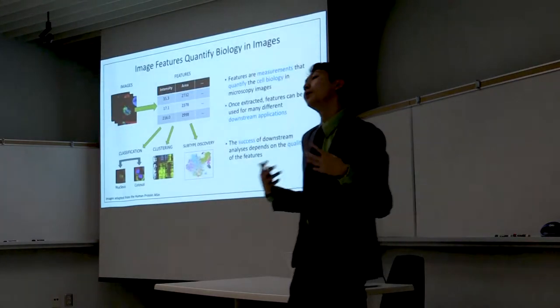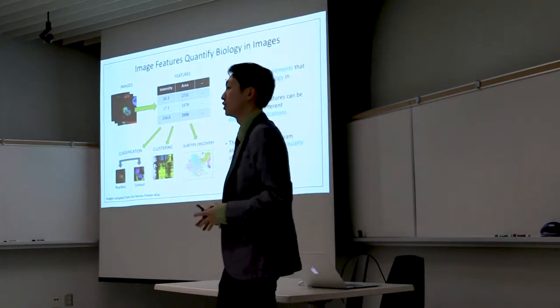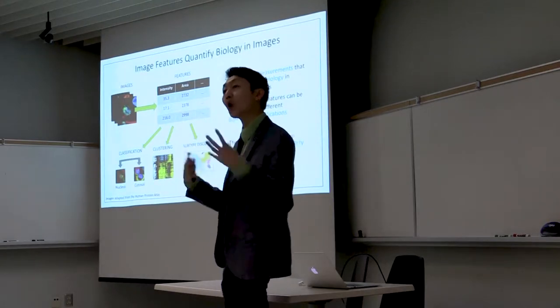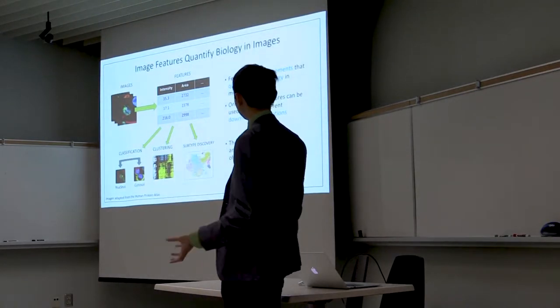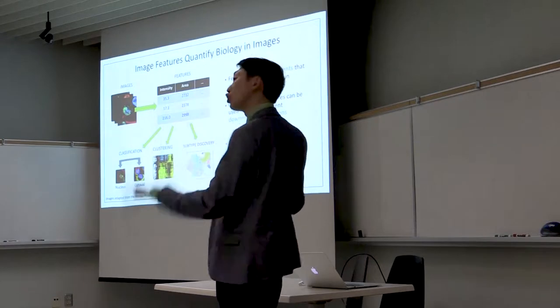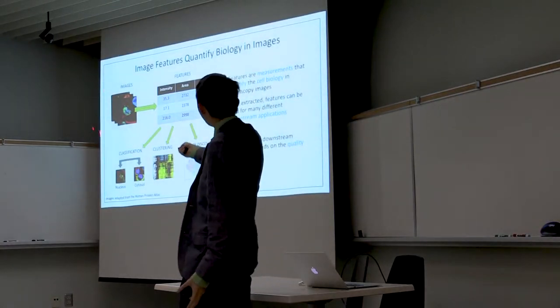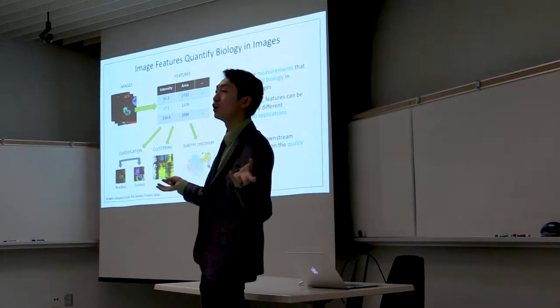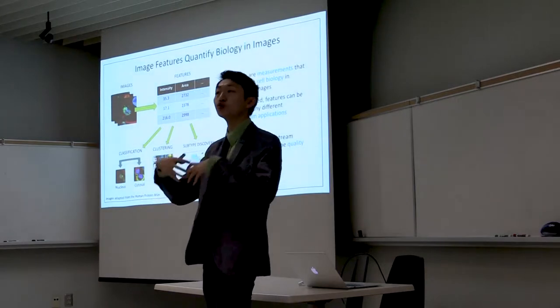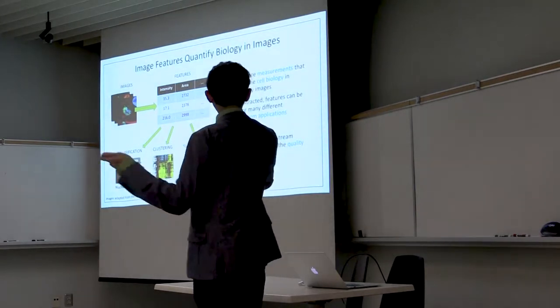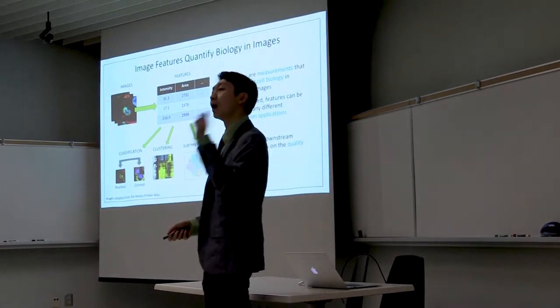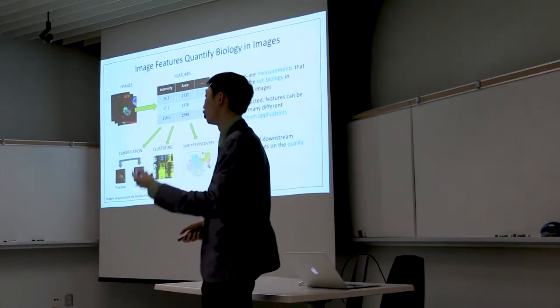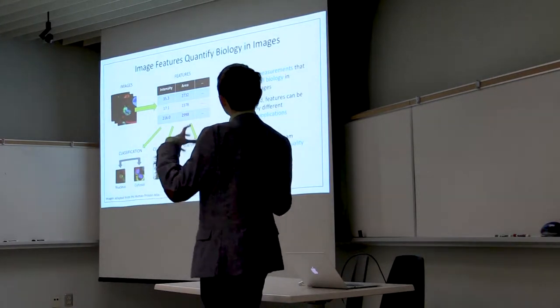The standard way that people work with microscopy images is that they will turn them into features as a way to quantitate the biology within these images. You'll start out with the images and then you'll do some pre-processing. You'll segment the single cells or you may correct the illumination.